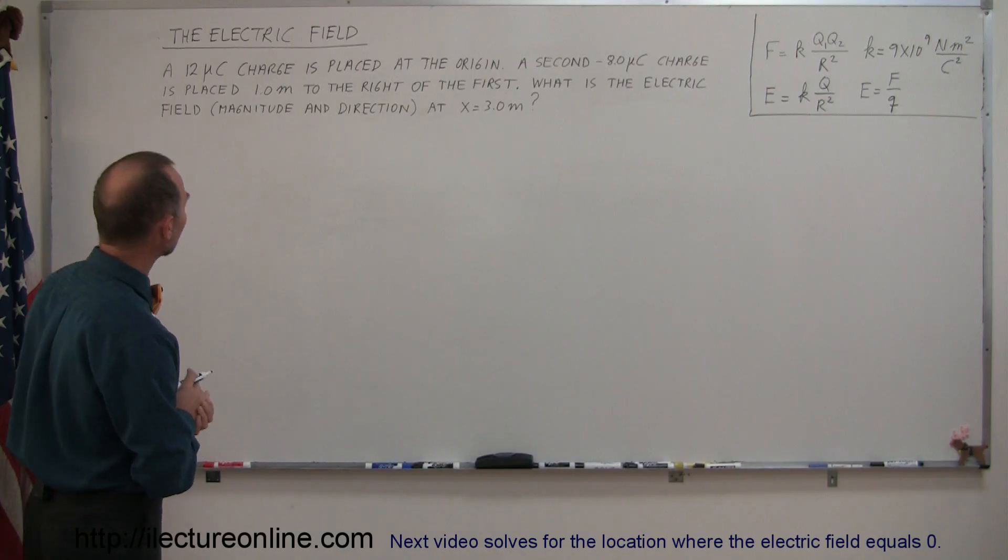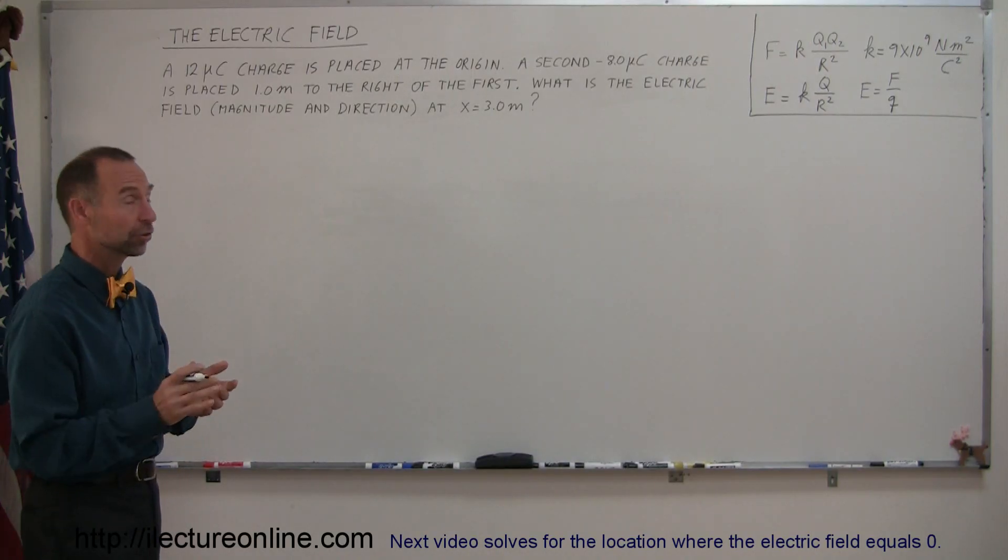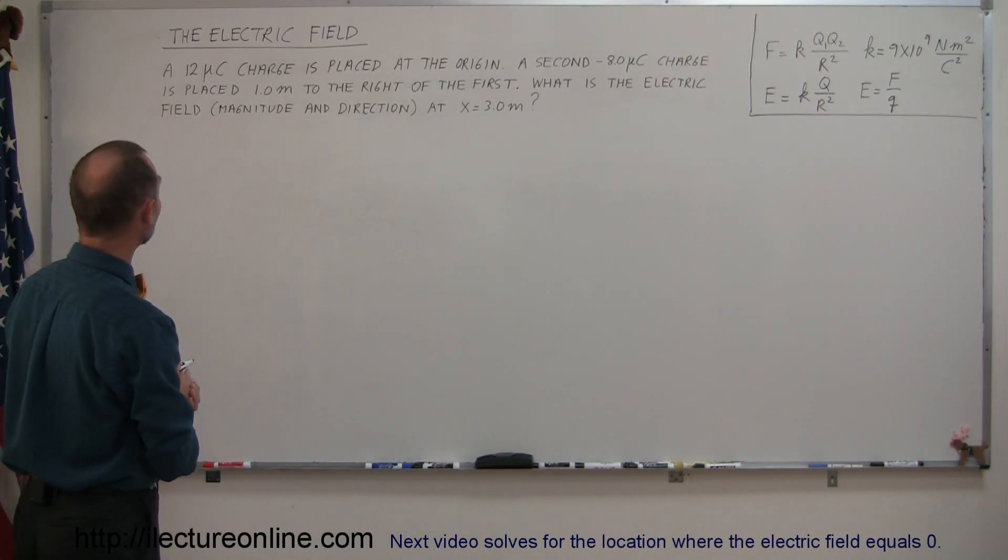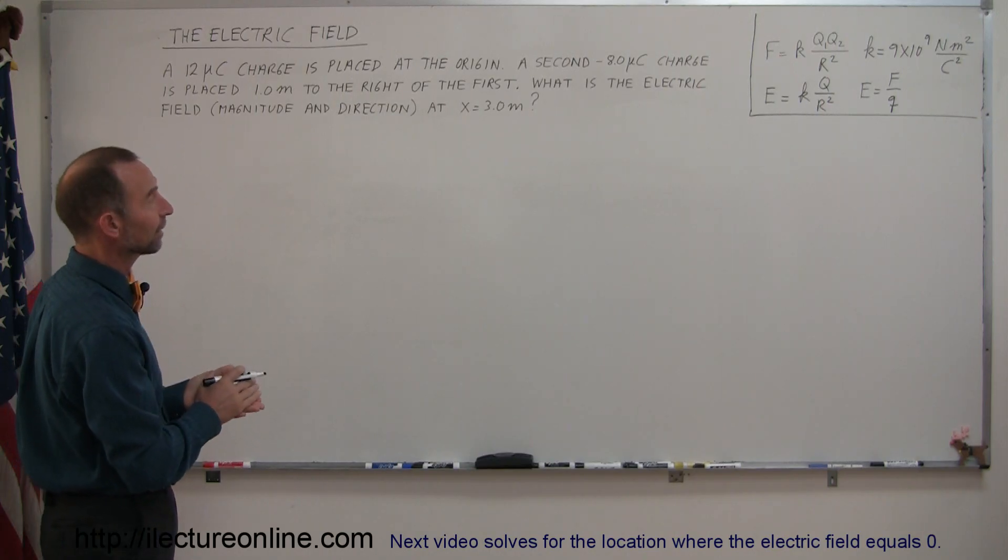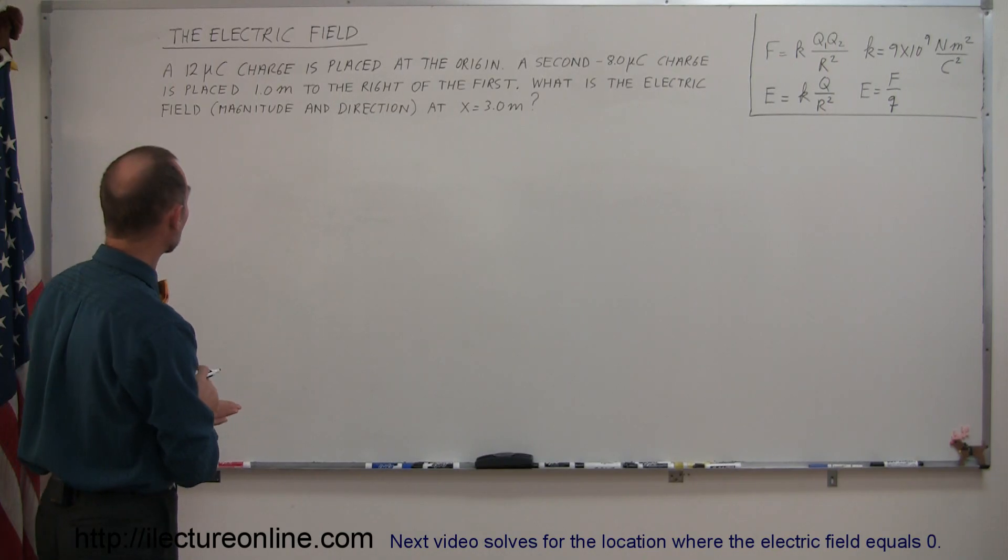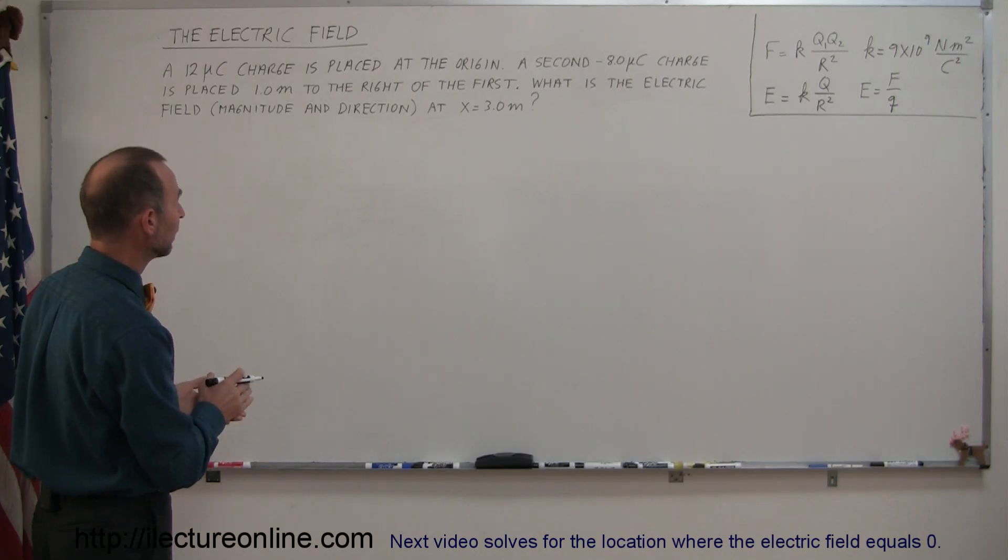Here's a good example. We have a situation with two different charges. We have a 12 microcoulomb charge placed at the origin and a second negative 8 microcoulomb charge placed one meter to the right of the first charge.